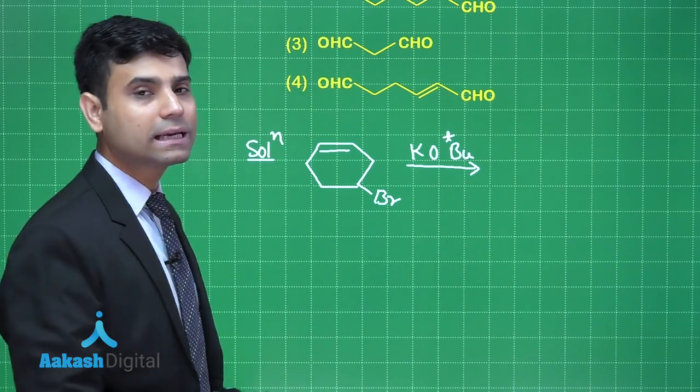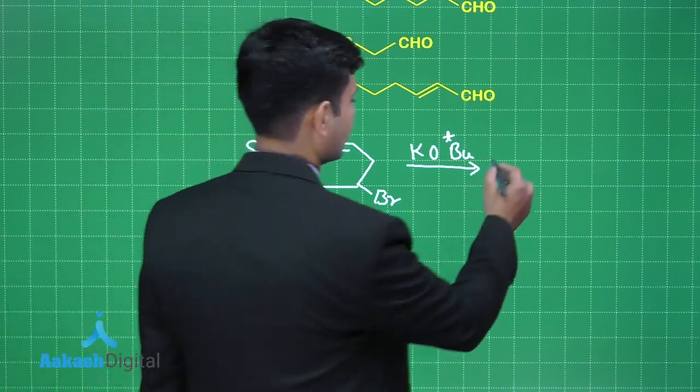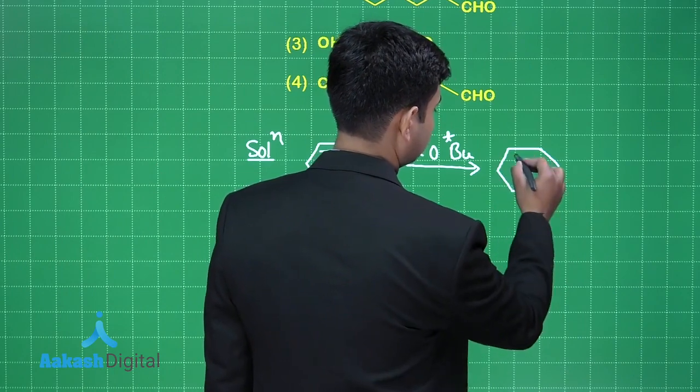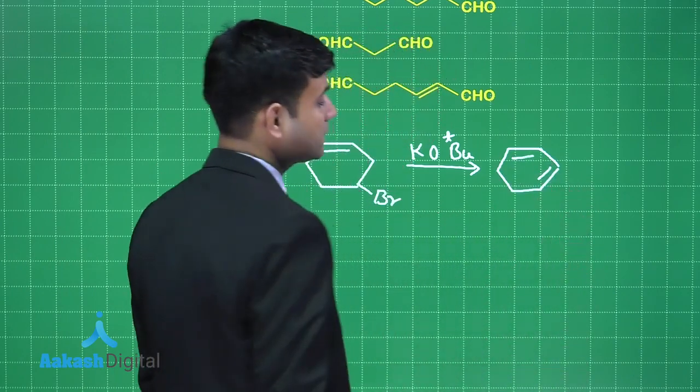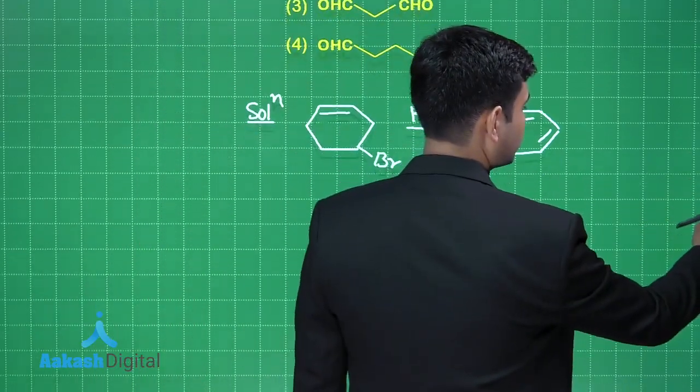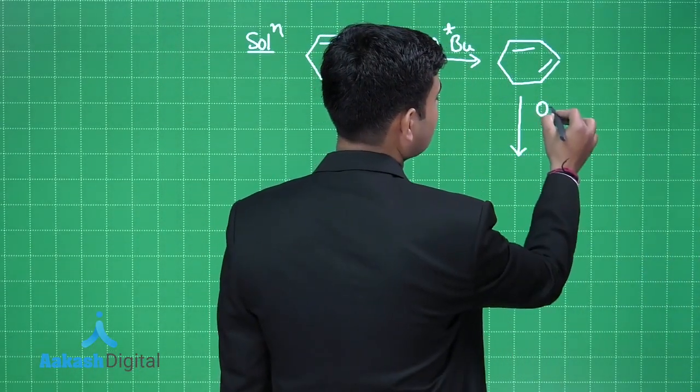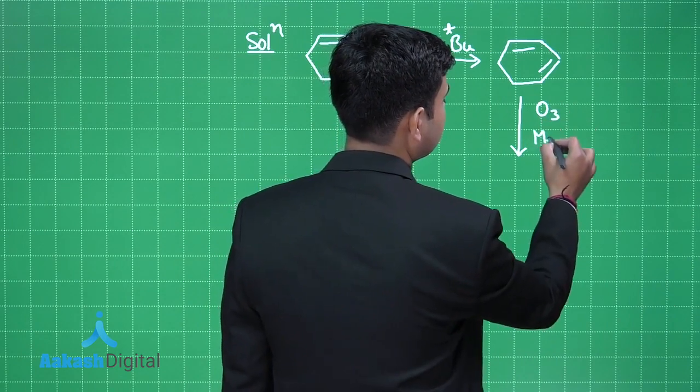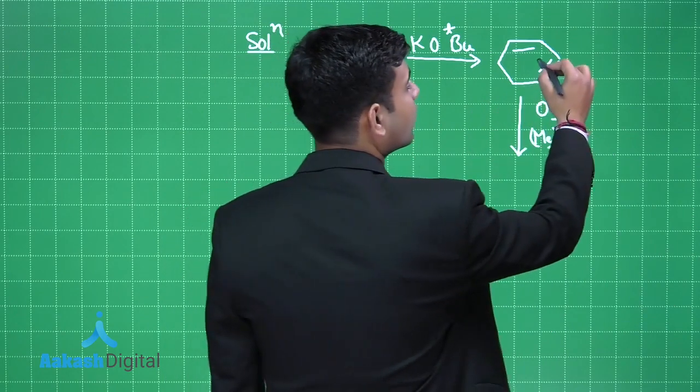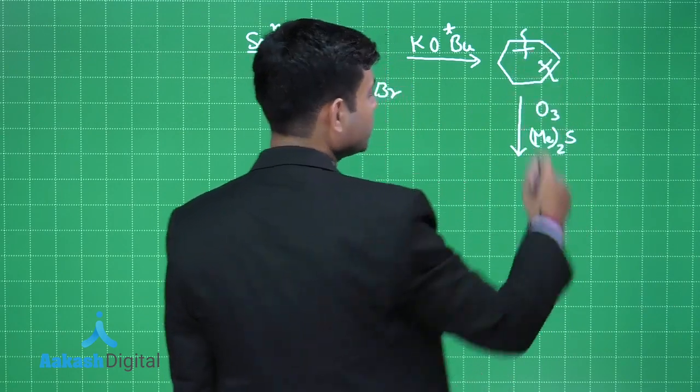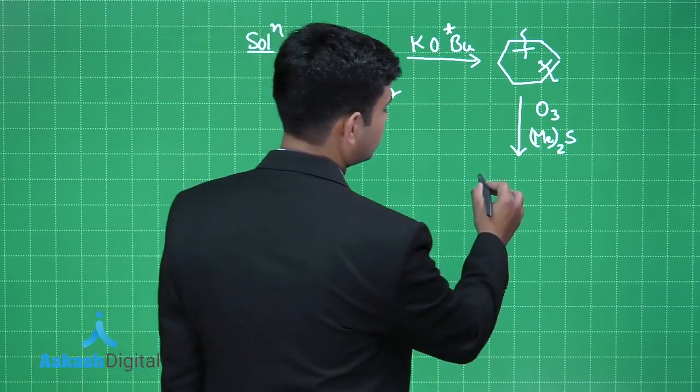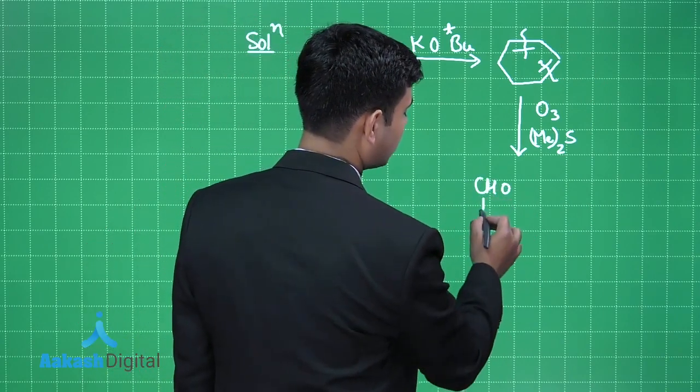Elimination takes place. More stable alkene will be formed. Here this alkene will have conjugation. Now on reductive ozone analysis, the bonds will break from here and two different aldehydes will be formed.